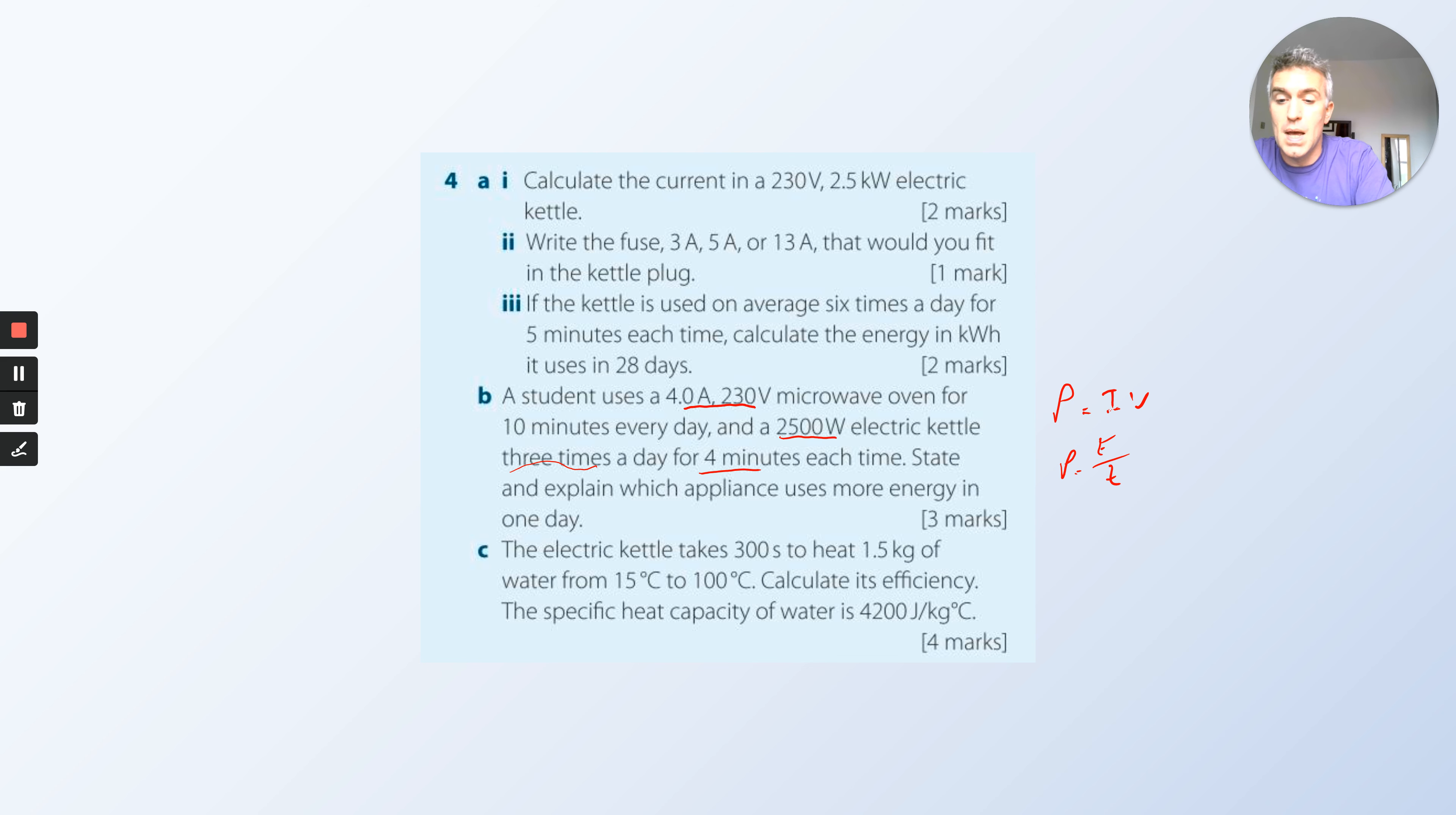An electric kettle takes 300 seconds to heat 1.5 kilograms of water from 15 to 100 degrees. Calculate its efficiency. The specific heat capacity of water is that. Remember, the specific heat capacity energy is equal to mass times specific heat capacity times change in temperature. So mass times specific heat capacity times change in temperature, that's how much energy you're going to need. Temperature change, 100 minus 15.